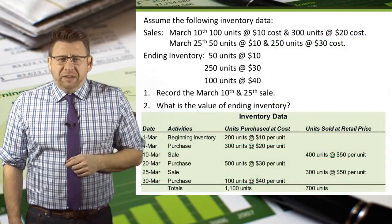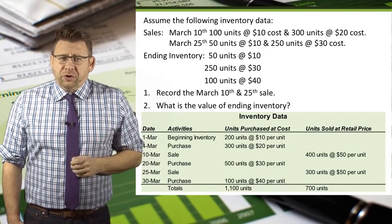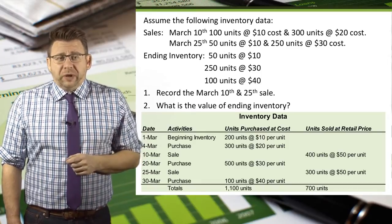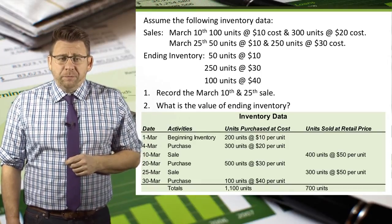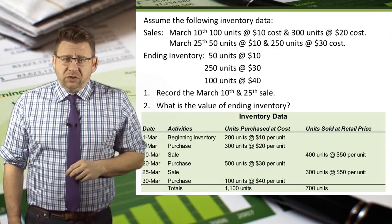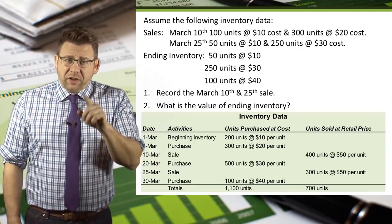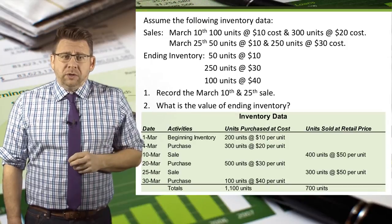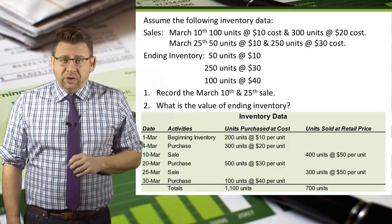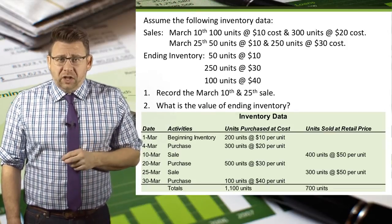Let's assume the following inventory data. March 1st beginning inventory is 200 units at $10 each. March 4th we purchased an additional 300 units at $20 each. March 10th we sold 400 units at $50 each — that's the retail price, not the cost. The cost of the units sold came from 100 units at $10 each and 300 units at $20 each.